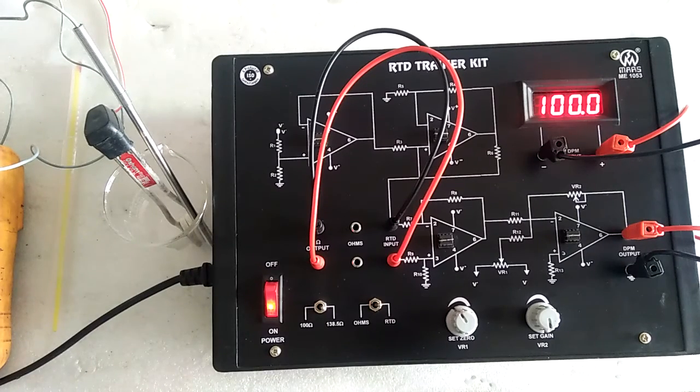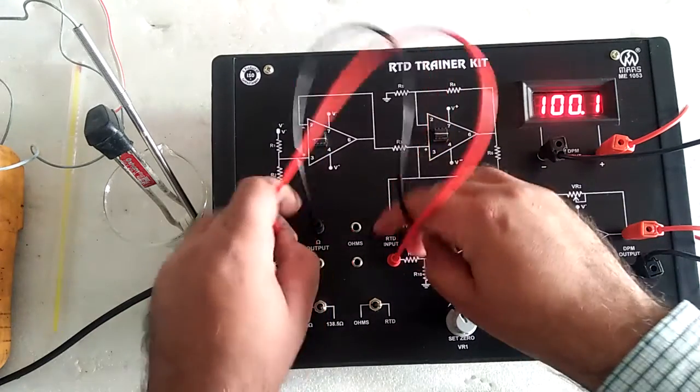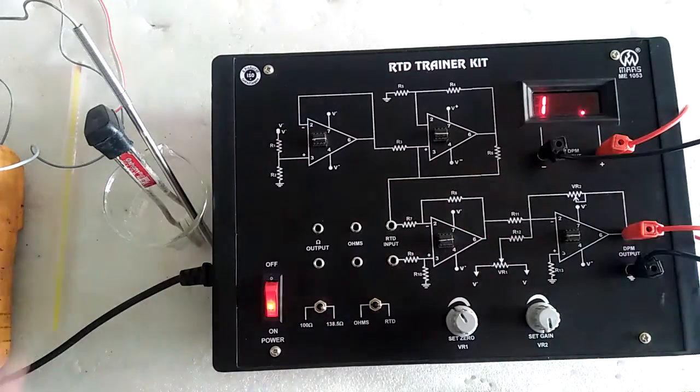Calibrate the signal ignition circuit. Remove the patch cords.